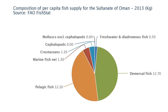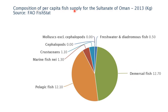Looking at Oman's per capita fish supply, most of it comes from demersal and pelagic fish — people much prefer demersal and pelagic fish. Basically, kingfish, tuna, and sardines are the popular fish. So Oman's per capita fish supply is mainly coming from demersal and pelagic fish.